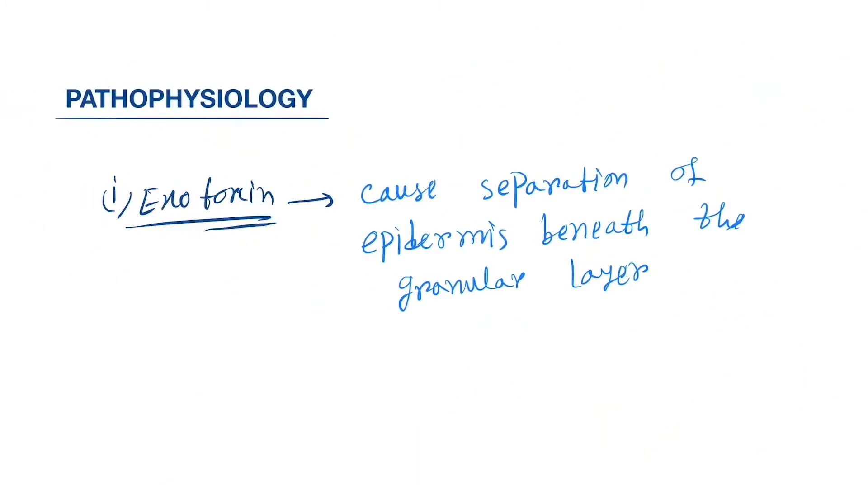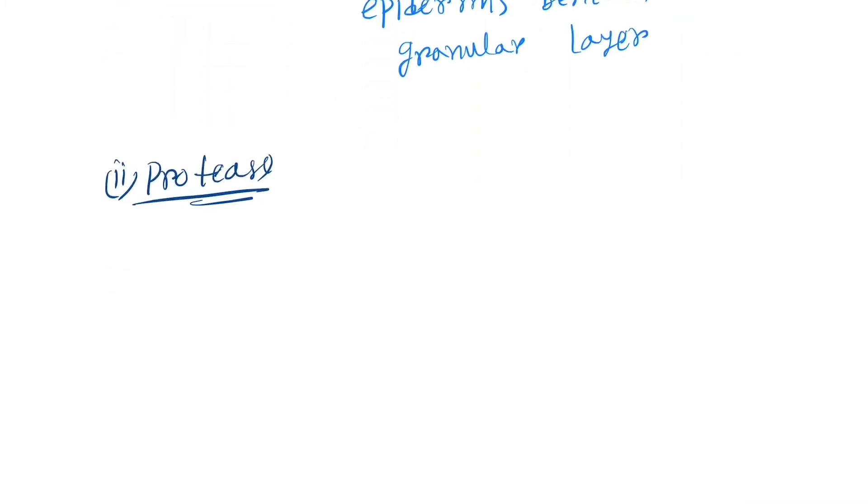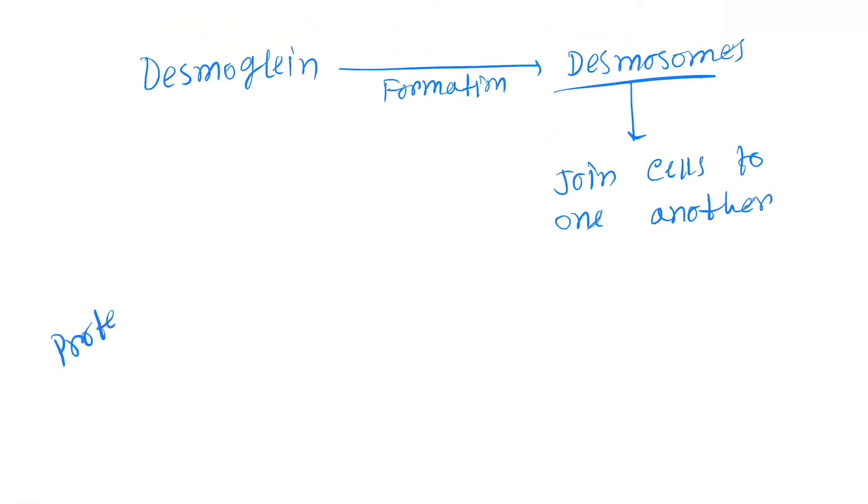Now let's see protease. Protease is an enzyme. Normally, desmoglein - which is a protein of the desmosome family - causes formation of desmosomes. Desmosomes help to join cells to one another. Protease causes inhibition of desmoglein.